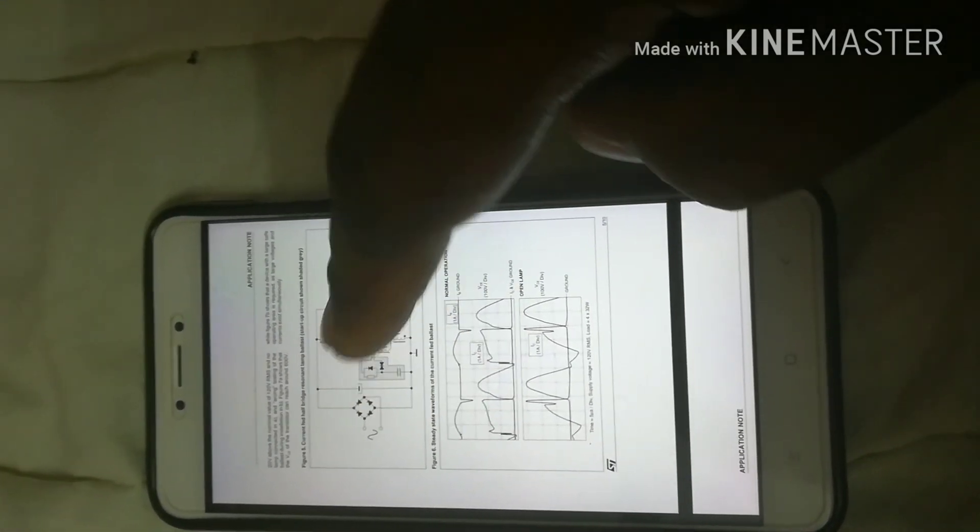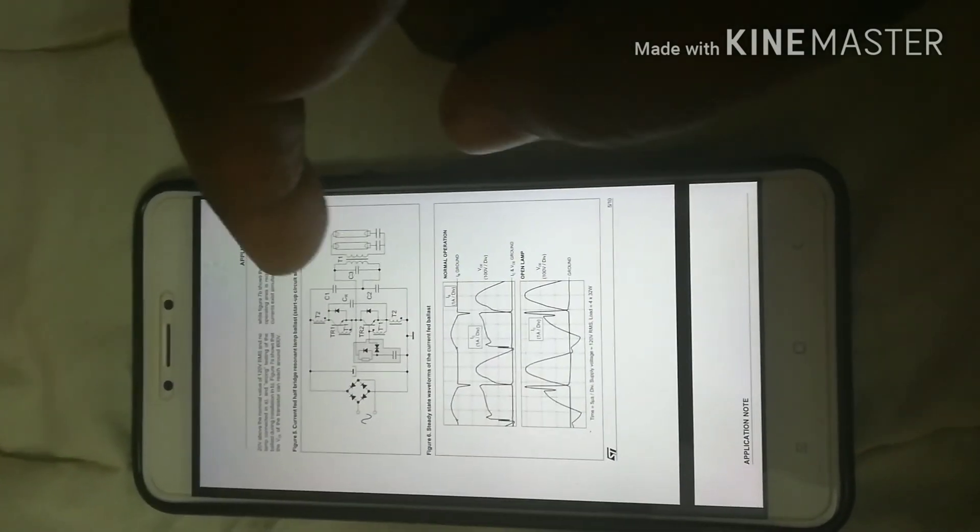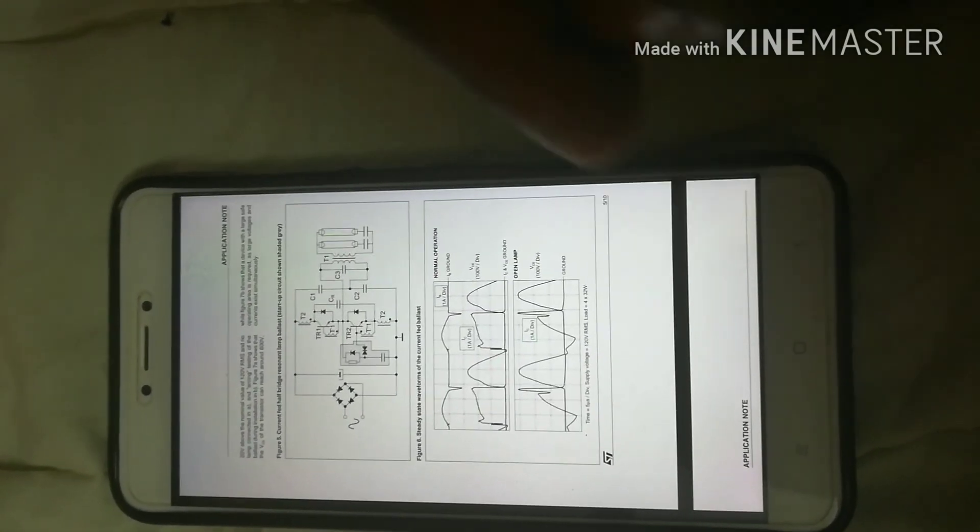It all basically does the same function. Except in the case of electronic ballast, it is rapidly faster and provides a faster response. So you don't see the light flicker at first. So this is pretty much the circuit in detail.